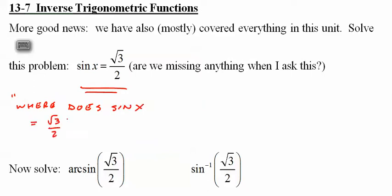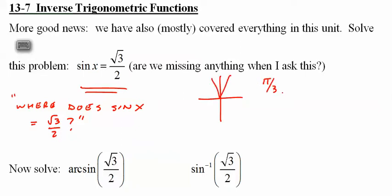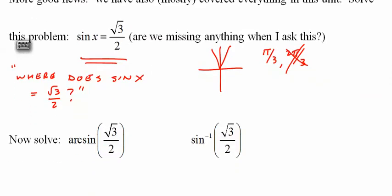Where does sine of X equal root 3 over 2? If you look on the unit circle, that happens up here and up here — at pi over 3 and 2 pi over 3. Remember, we want to put everything in radians from here on out. We're going to cross out the 2 pi over 3 — I'll explain why in a moment.